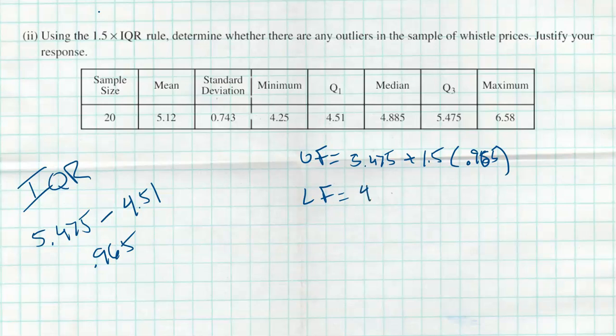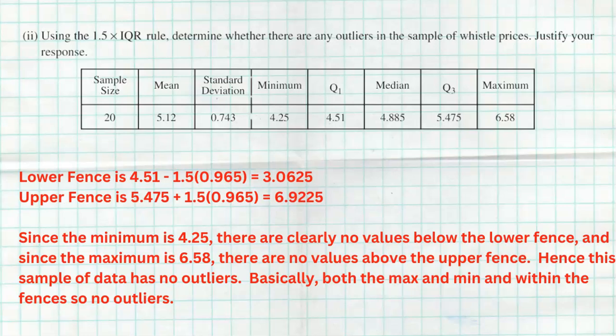Then we're going to do the same thing with the lower fence. The lower fence is going to be taking 4.51, Q1, subtract 1.5 times 0.965, the IQR, and any value below that. We can look in our dot plot to see if there's any value below that lower fence that would be deemed an outlier. We also have the min that can help us understand as well. I actually went ahead and showed the work. I got a lower fence of 3.0625. If we look at our min, the min is 4.25. Obviously, there's nothing below 3.0625 if our min is at 4.25. So we have no lower outliers. Our upper fence is at 6.9225. Our max is at 6.58. If our max is at 6.58, then obviously there's no data above 6.9. Basically, both the max and the min are within our fences. Hence, there are no outliers in this data according to the 1.5 times the IQR rule.